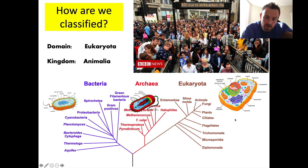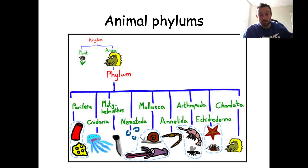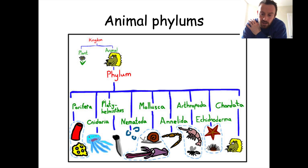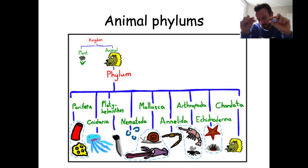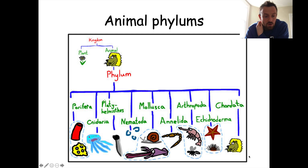Let's delve deeper and continue classifying human beings. We're in the kingdom Animalia, domain Eukaryota. What about the phylum? Here are all the animal phylums — there are a ton of them — and we're in the phylum Chordata, which means we basically have backbones. Chordata is a slightly larger group than vertebrates because it also includes animals that have a nerve cord down the back of the body which isn't necessarily fully bony. Other animal phylums don't have this nerve cord, for example Mollusca — things like squids — or Cnidaria, which includes things like jellyfish.